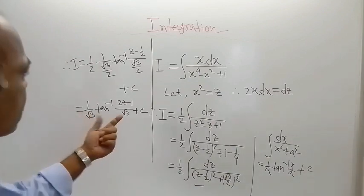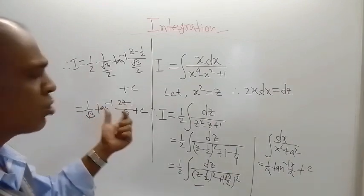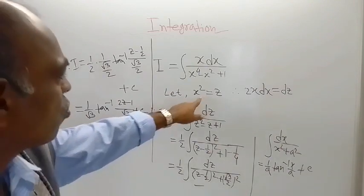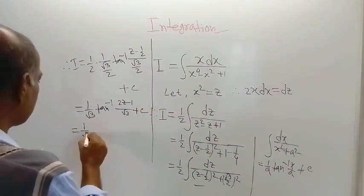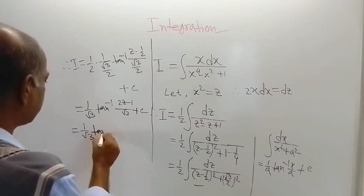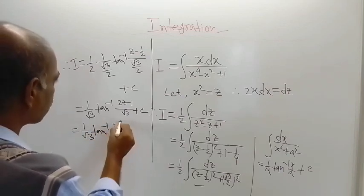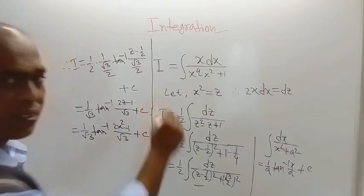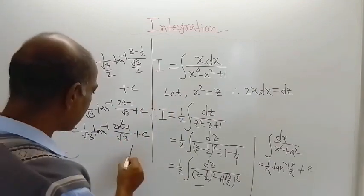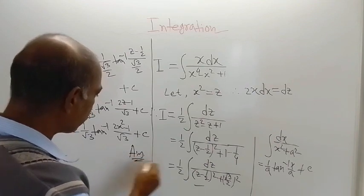And now at last, you just put the substitution for z, which is equal to x square. So what we are getting is 1 by root 3 tan inverse 2x square minus 1 divided by root 3 plus c. And this is the answer to the given problem.